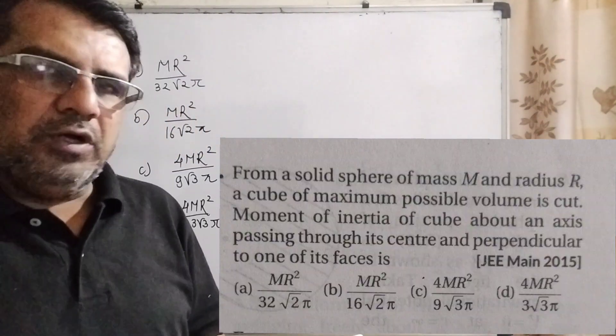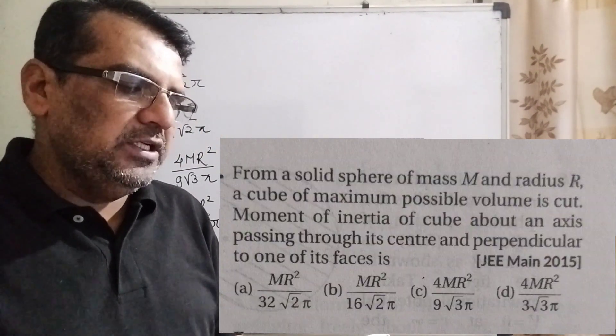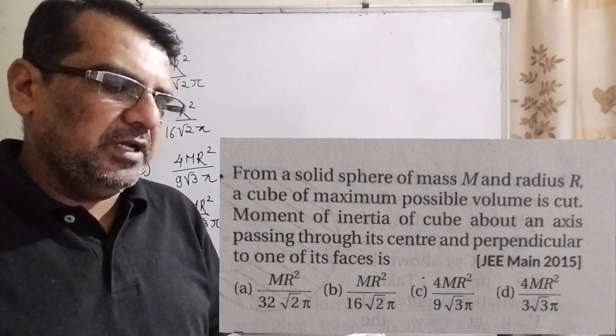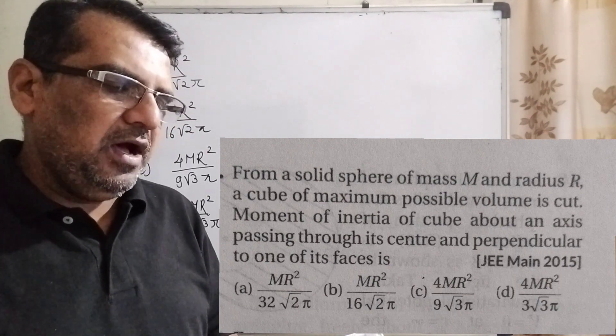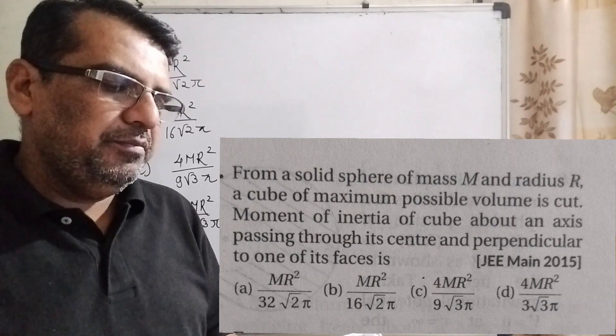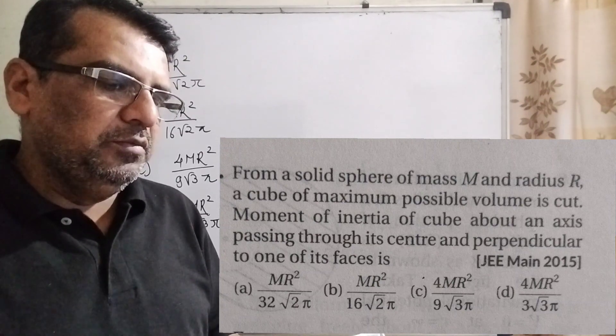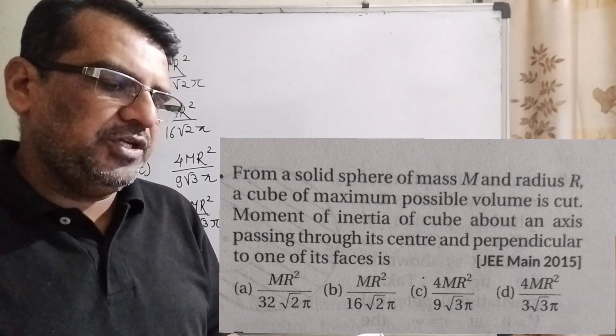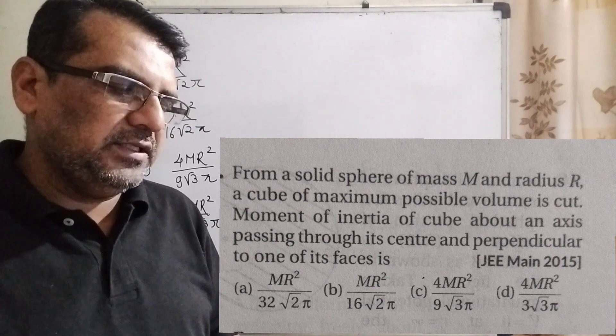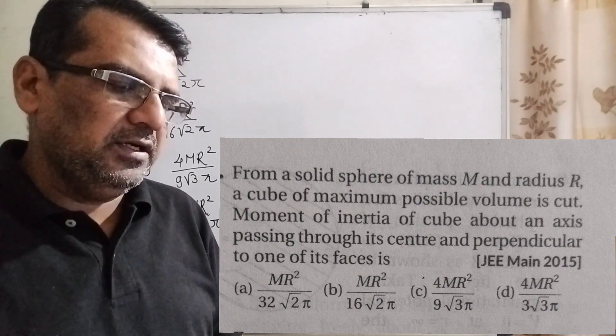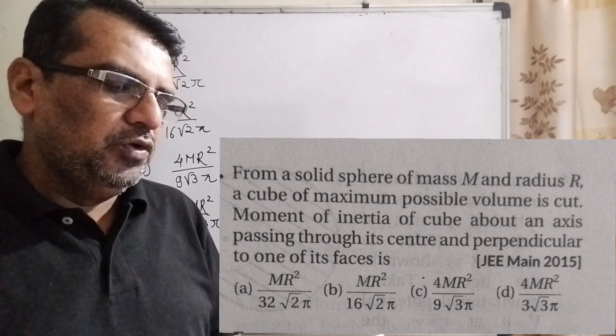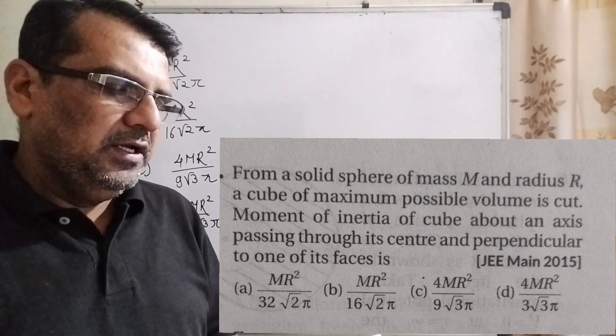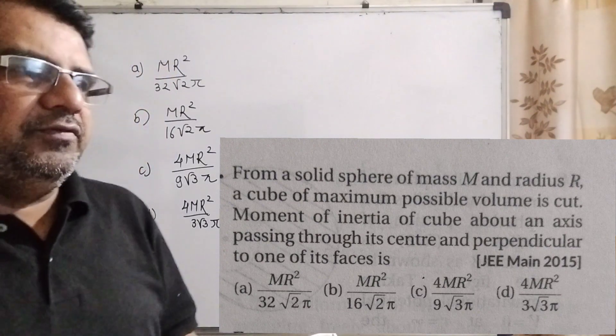Let's move on to what the question says. From a solid sphere of mass capital M and radius capital R, a cube of maximum possible volume is cut. Moment of inertia of cube about an axis passing through its center and perpendicular to one of its faces is, you have given four options.